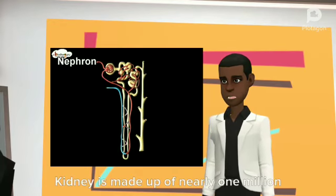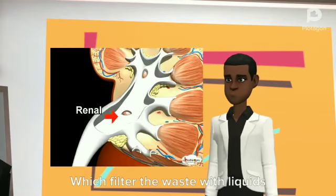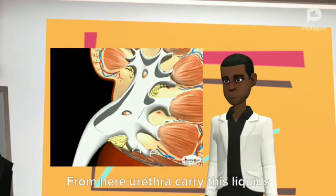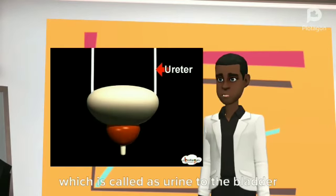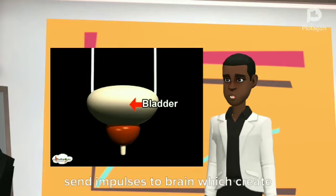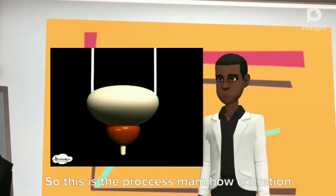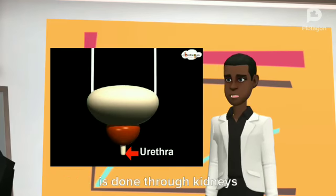Kidney is made up of nearly one million filtrate units, that is nephron, which filter the waste with liquids from blood down to the renal pelvis. From here ureters carry this liquid, which is called urine, to the bladder. When the bladder is almost full it sends impulses to brain which creates the sensation of urge to urinate. So this is the process ma'am, how excretion is done through kidneys.